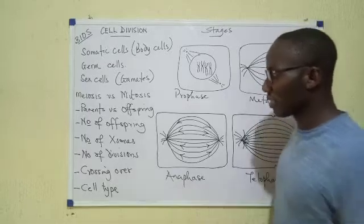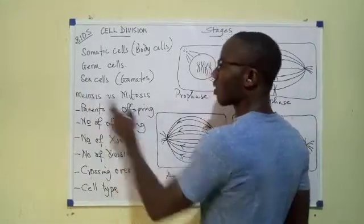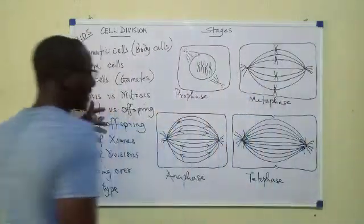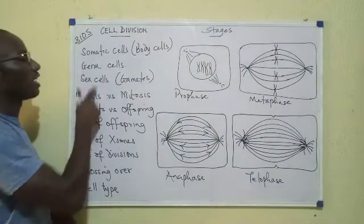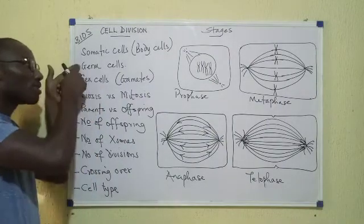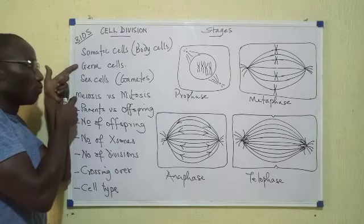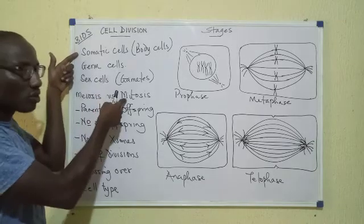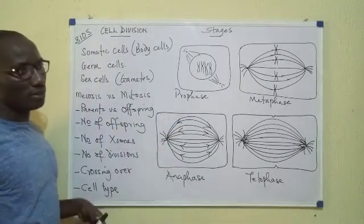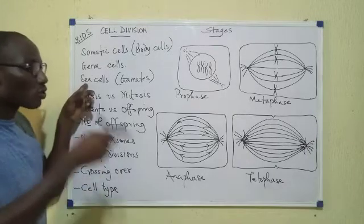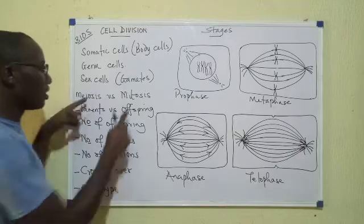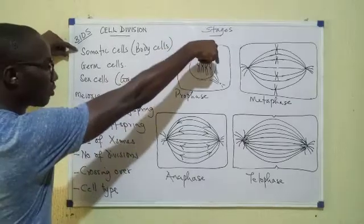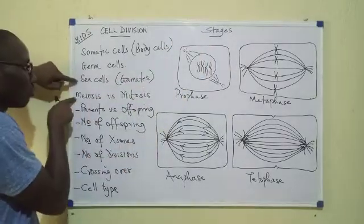Now having mentioned those three types of cells, there are two main types of cell divisions: meiosis and mitosis. Meiosis occurs in germ cells to produce sex cells. Somatic cells undergo mitosis to produce other somatic cells, which means sex cells do not undergo any type of division. Somatic cells form mitosis to produce more somatics, germ cells undergo meiosis to produce gametes.